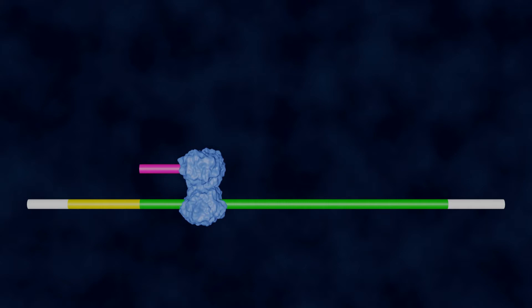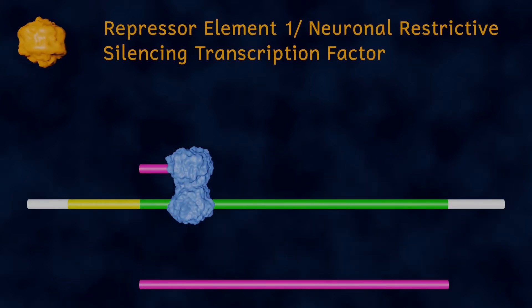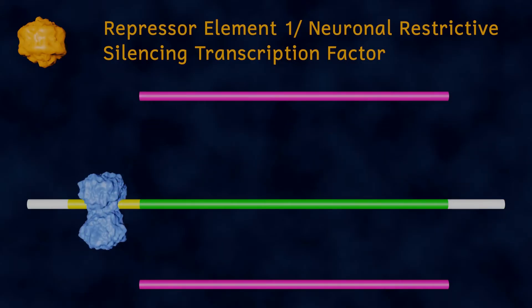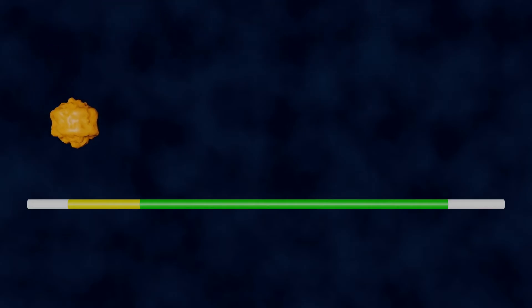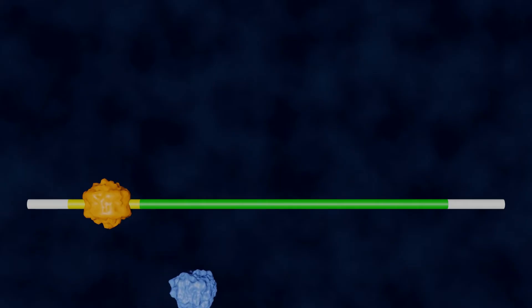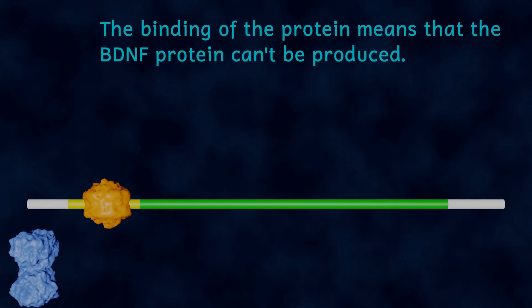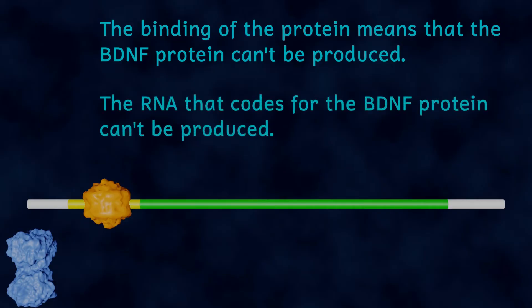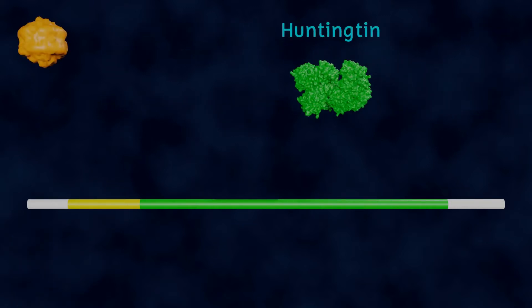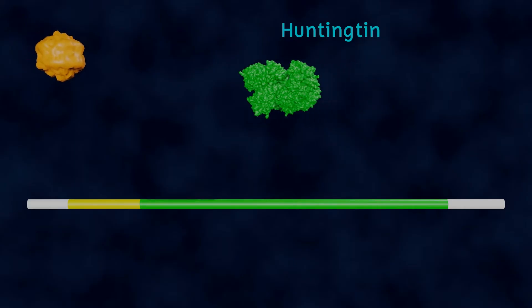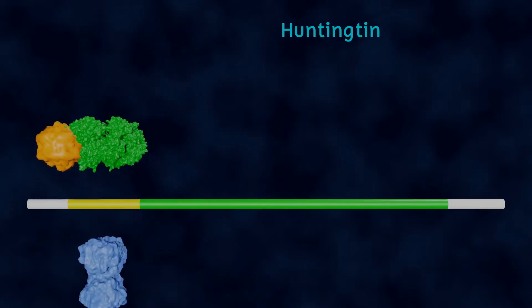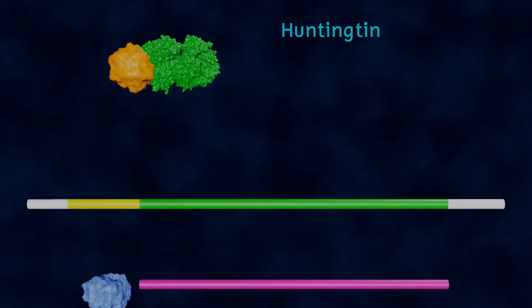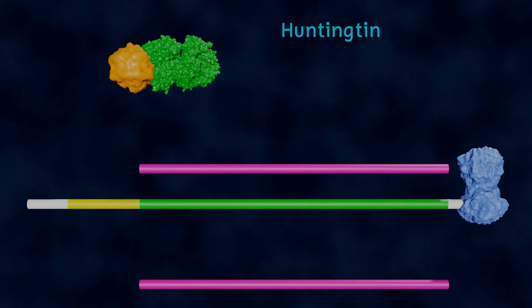There's another protein with another very long name called repressor element 1 slash neuronal restrictive silencing transcription factor. Now if this protein binds to that regulatory region just before the gene it stops the cell from using the gene to make the BDNF protein and don't forget that brain cells need this BDNF protein to grow and survive. The binding of this protein would therefore not be good for the growth of brain cells. Huntington has been shown to bind to this protein stopping it then from binding to the regulatory region.